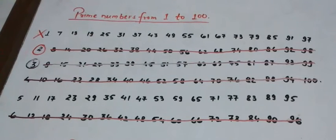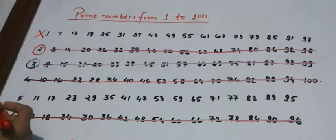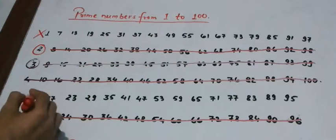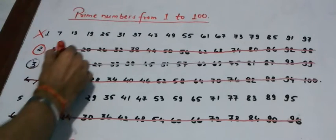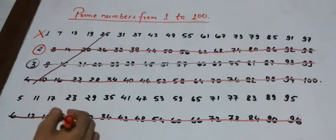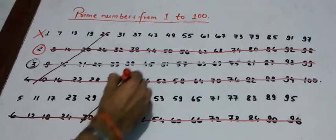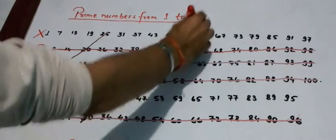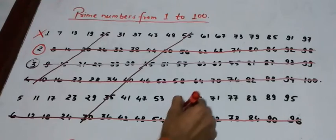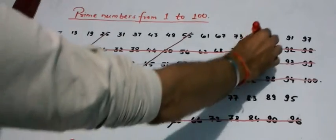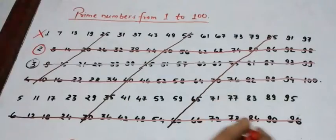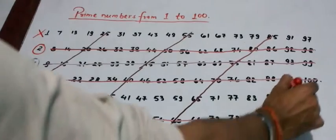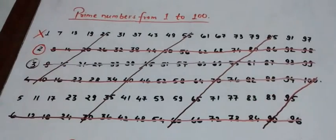Now in the third step, we cut off all the multiples of 5 except 5. That is from 10 to 25, 30 to 55, 60 to 85 and 90 to 100.